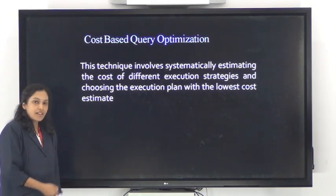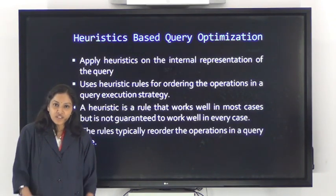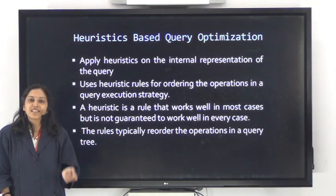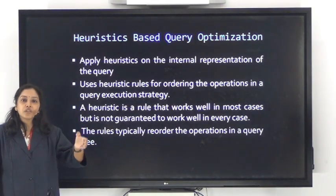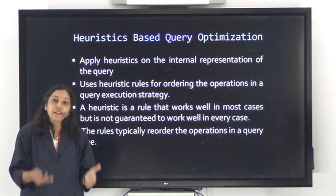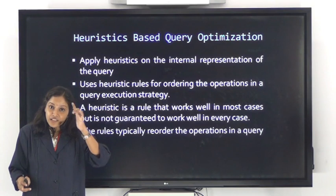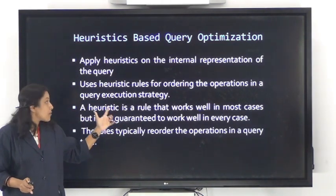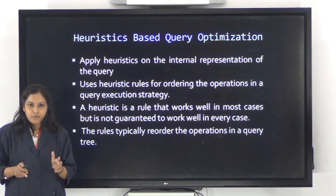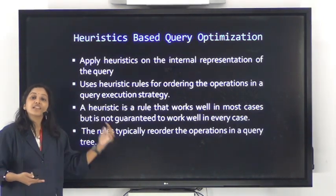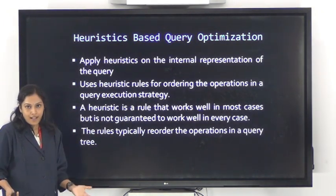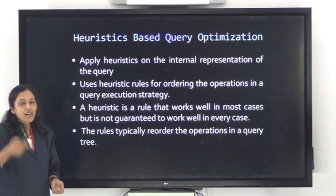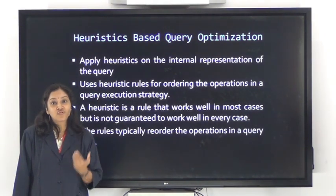Our topic for discussion is heuristic-based query optimization, the second strategy for optimizing a query. Heuristic, as the name implies, requires some level of intelligence. We apply intelligent reasoning to the query rather than trying every possible strategy. However, heuristic query optimization does not always guarantee the best result — in most cases it works well, but in some cases it might fail because we are not exhausting all possible strategies.